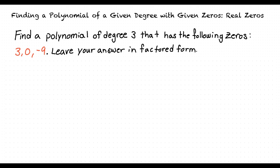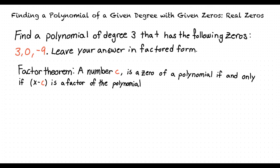Before we start to find this polynomial, it's important to review the factor theorem. The factor theorem states that a number c is a zero of a polynomial if and only if x minus c is a factor of the polynomial.